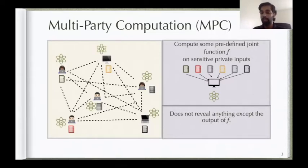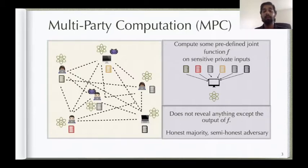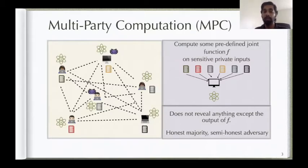The setting we consider is that of honest majority, which means at least half of the parties participating in the protocol are honest and not corrupted, and a semi-honest adversary, which means the corrupted parties also stick to the protocol. They follow everything as they are supposed to, but they try to learn about other parties' inputs by reading the protocol messages. So that is the setting that we are in.